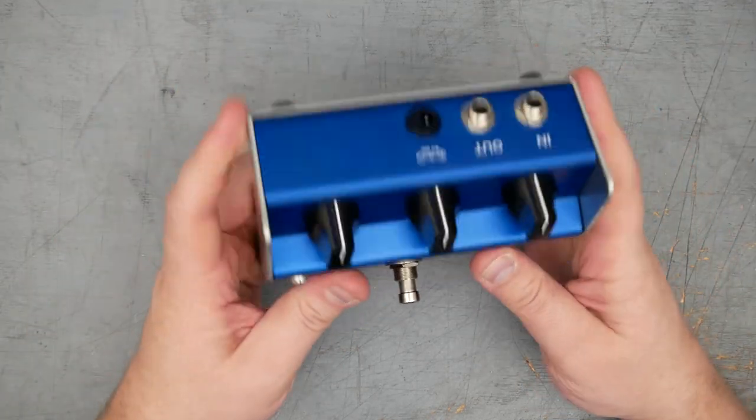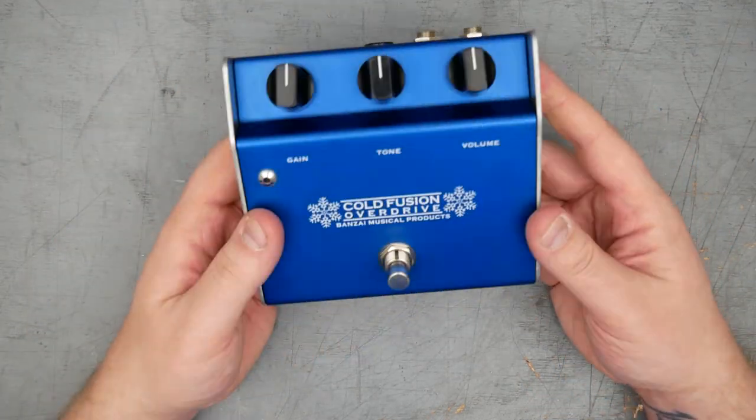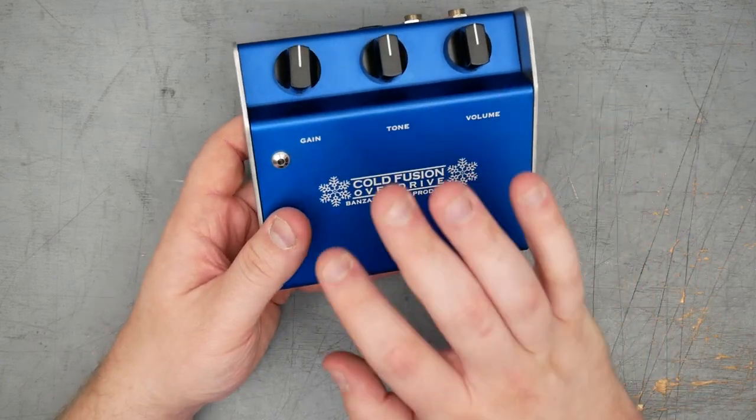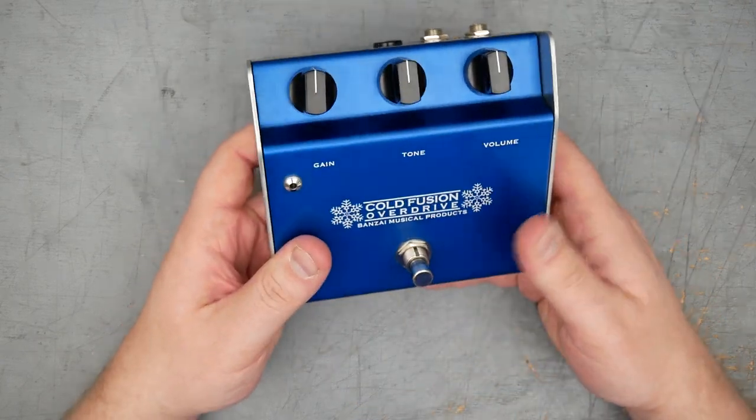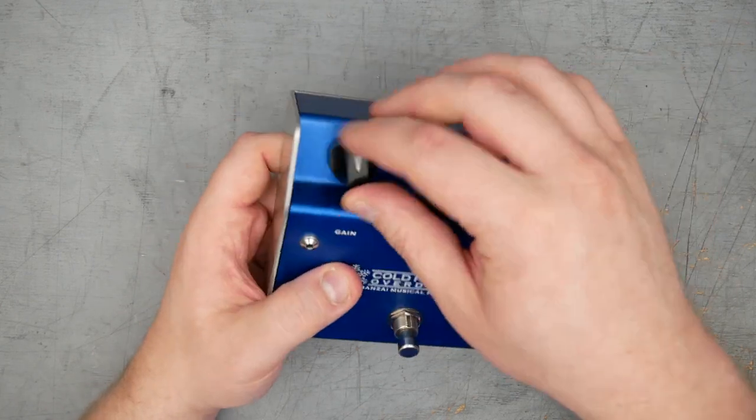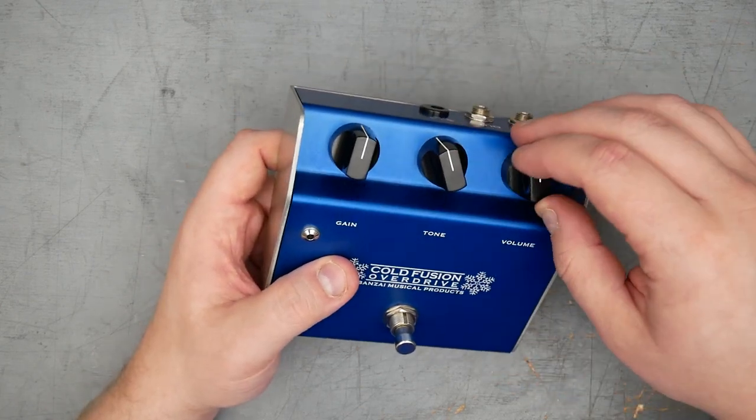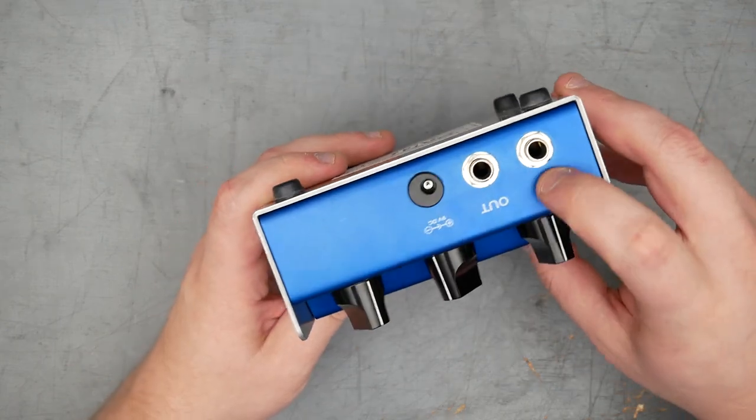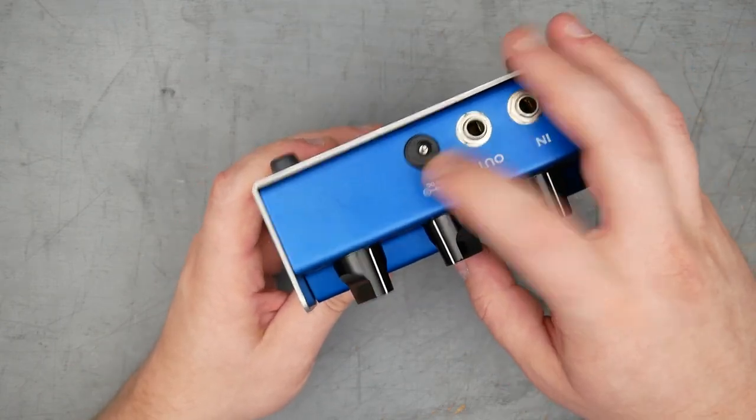As far as the externals, it's in this nice folded aluminum anodized enclosure. ColdFusion Overdrive silk screen, latching foot switch, nice little chrome bezel here with a three millimeter LED. Knobs are these sort of plastic pointer knobs, top-mounted jacks. We have input and output jacks, internal nut DC jack.